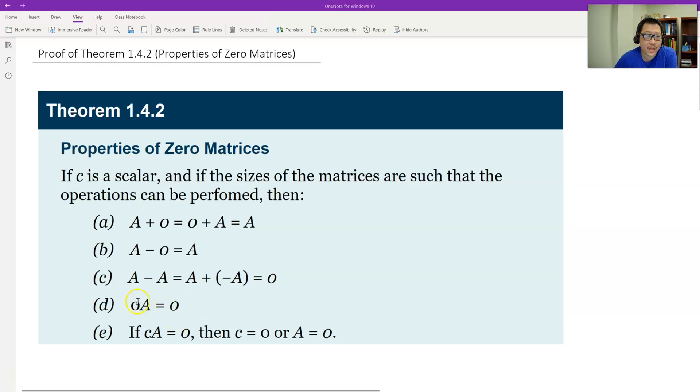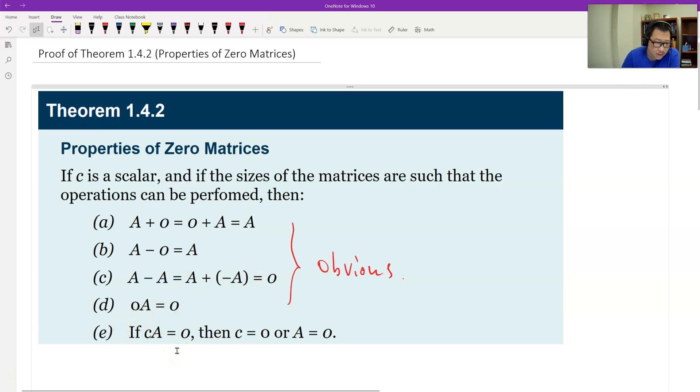Or another way, if this zero is a matrix, and then what do we get? We also get the zero matrix, right? And all this is obvious. I just leave for you to verify. All this is obvious. Let's just use definition to prove. I prove one E.